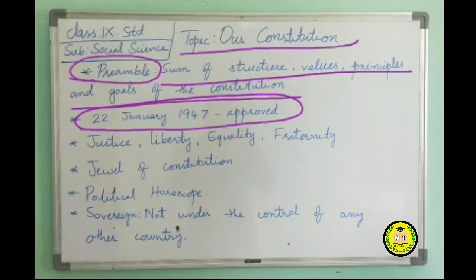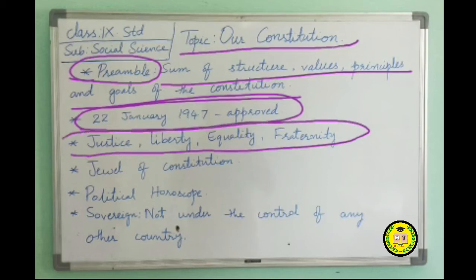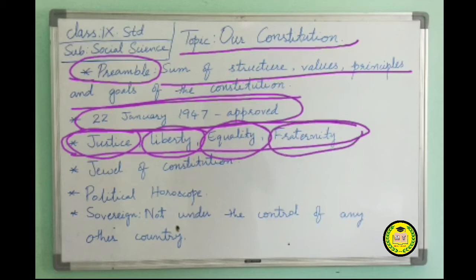The preamble has four key points: Justice, Liberty, Equality and Fraternity. Justice includes social, economic and political justice. Liberty means freedom of thought, expression and belief. Equality means equality of status and of opportunities. Fraternity means universal brotherhood, assuring the dignity of the individual and the unity and integrity of the nation.